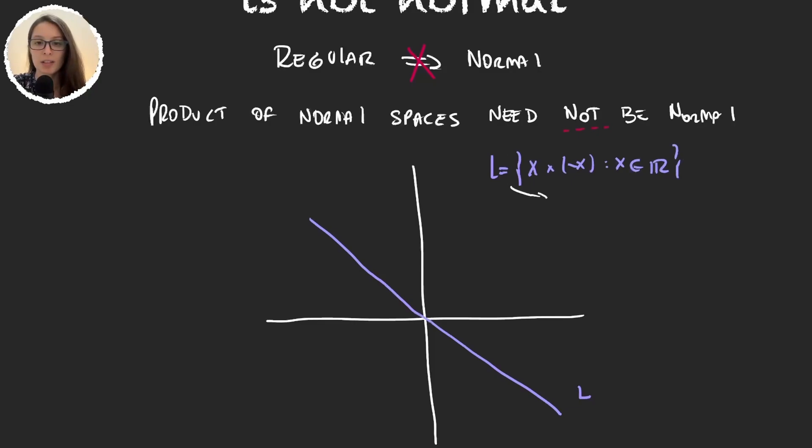Let's first see if we can get a topology here. We're obviously talking about RL times RL, and so the Sorgenfrey plane is going to have the product topology of RL times RL. And so L will have the topology induced by this one.